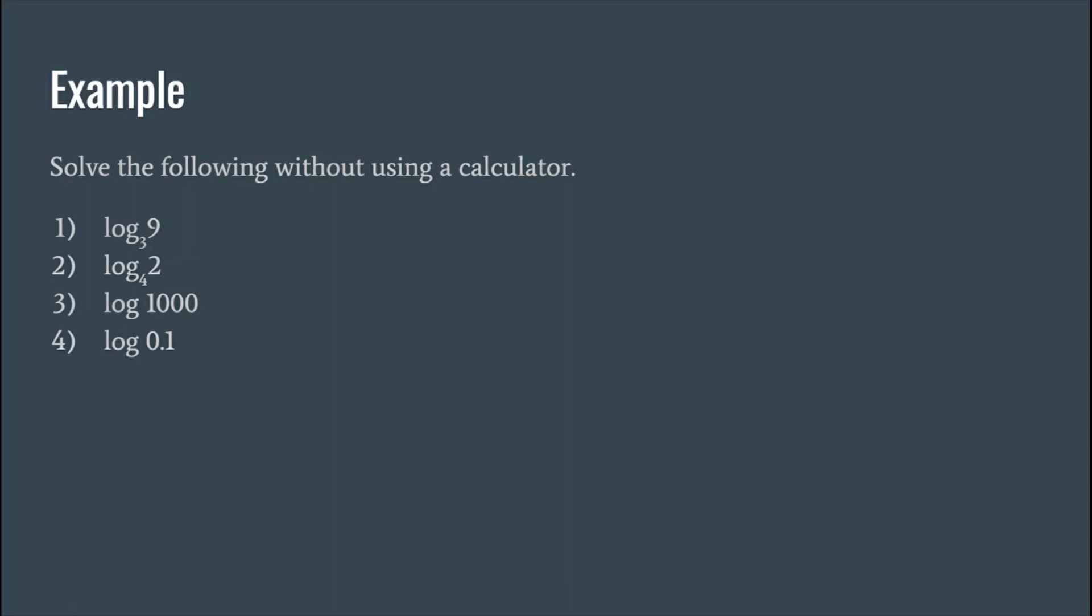The way we write square roots as exponents is in fraction form. If you took the third root of something, you would write that as an exponent as one-third.